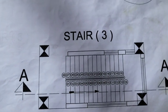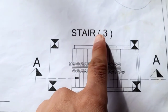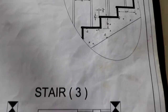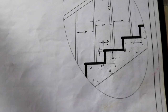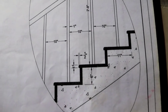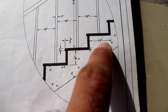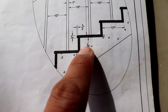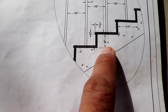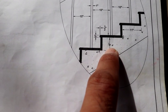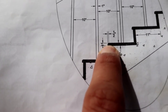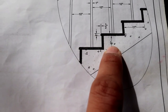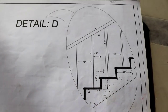This is the plan for stair 3. You can see a section here. Coming to its detail — the tread is 11 inches, you can see, and the riser height is 6 inches. There is also a tile of 1 inch, so the total height of the riser is 6 inches as shown in its details.